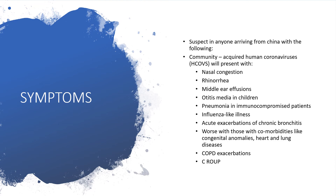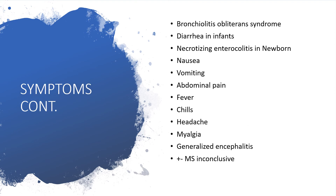Additional symptoms include influenza-like illness, acute exacerbation of chronic bronchitis — especially in those with co-morbidities like congenital anomalies, heart and lung diseases, COPD exacerbations, bronchiolitis, diarrhea in infants, necrotizing enterocolitis in newborns, nausea, vomiting, abdominal pain, fever, chills, headache, myalgia, and generalized encephalitis with or without multiple sclerosis.